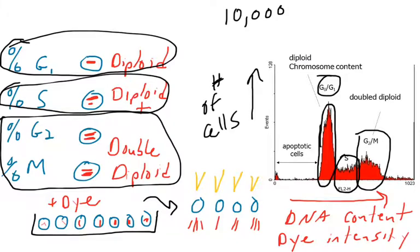Cells that have completed S phase now have double the amount of DNA, and so they're either in G2 or they're about to undergo mitosis. We call this the G2M peak. It's the area under this peak that represents the number of cells or percentage of cells that are in G2M.